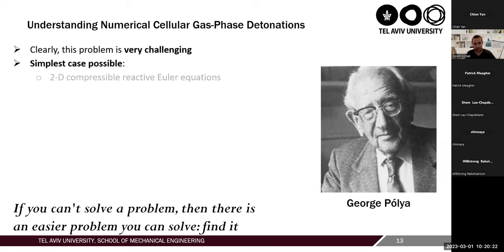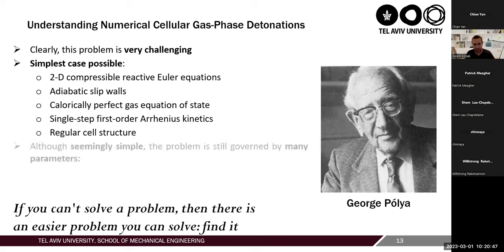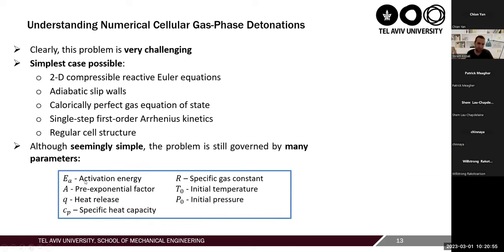Let's take the simplest case possible. Let's assume we are solving detonations using the 2D compressible reactive Euler equations, with adiabatic slip walls, calorically perfect gas equation of state, and single-step first-order Arrhenius kinetics. So everything is very simple: reactants turning into products with a single-step reaction and regular cell structure. Yet even for this seemingly simple configuration, the cell size depends on the activation energy, the pre-exponential factor, the heat release, the specific heat capacity, the specific gas constant, and the initial temperature and pressure of the mixture — each affecting cell structure in different ways.